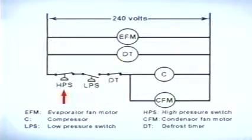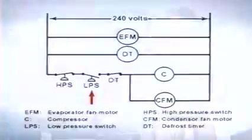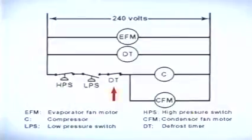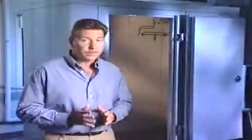The high-pressure switch, labeled HPS, is designed to open its contacts if the pressure in the system reaches an unsafe level. The low-pressure switch, labeled LPS, is designed to open its contacts if the pressure drops below a predetermined set point. The low-pressure switch can be used to either protect the system in the event it loses its refrigerant charge, or to maintain the cooler at the desired temperature. The defrost contacts, labeled DT, are controlled by the mechanical timer energized all the time. At predetermined time intervals, the contacts will open and cycle the compressor off to allow any ice that formed on the coil to melt. Even when the compressor cycles off, the evaporator fan motor and timer motor will remain energized because they're in separate parallel circuits.